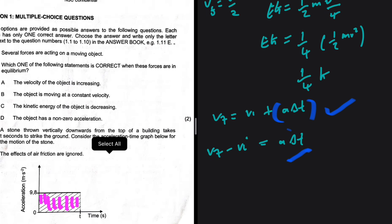Question 1.1: several forces act on a moving object. When these forces are in equilibrium, the velocity of the object is increasing — that is false. The object moves at constant velocity so acceleration is zero — that is correct. Kinetic energy decreasing or non-zero acceleration are both incorrect. The answer is B.